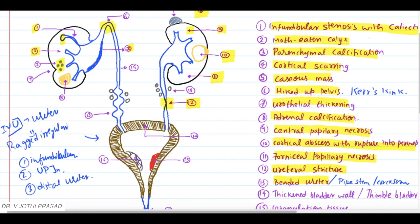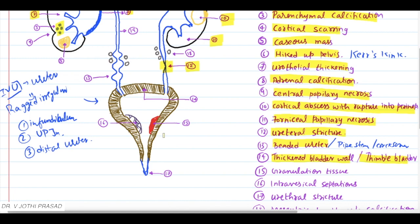The next finding is thickened bladder wall, otherwise known as thimble bladder. There will be diffuse thickening or hypertrophy of the bladder wall reducing its capacity, and this condition is known as thimble bladder.